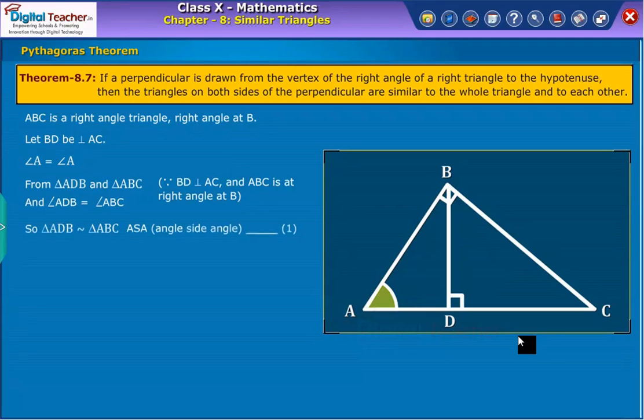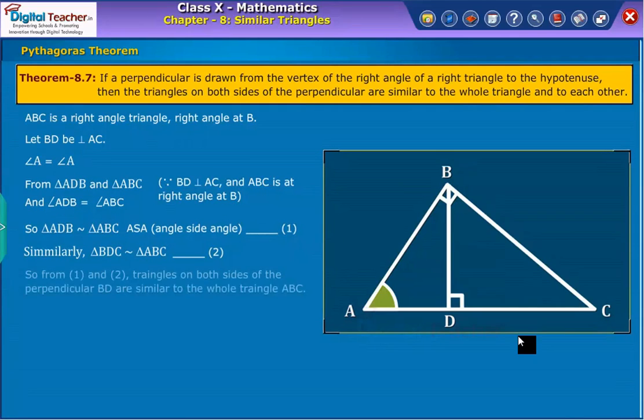Therefore, the triangles ADB and triangles ABC are similar by the property of ASA angle side angle. Similarly, it is same with triangles BDC and triangle ABC. Therefore, from the above, it is clear that the two triangles on both sides of the perpendicular BD are similar to the whole triangle ABC.